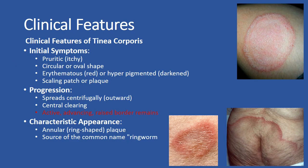Clinical features of tinea corporis. Initial symptoms: it starts as an itchy, circular or oval, red or darkened, scaling patch or plaque. Progression: the infection spreads outward with central clearing and an active raised border remaining. This creates a ring-shaped plaque, which is why it's commonly known as ringworm.